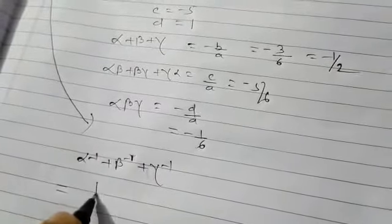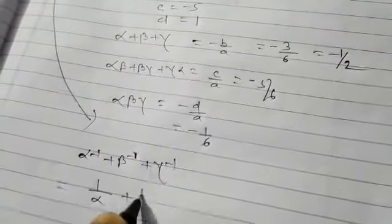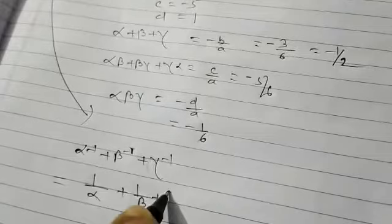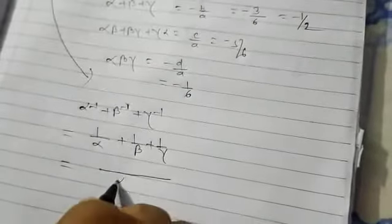Then we have to prove this. Alpha to the power minus one, beta to the power minus one plus gamma to the power minus one. And it can be written as one by alpha, one by beta plus one by gamma.